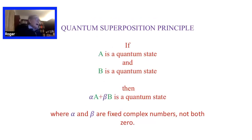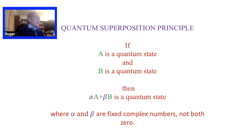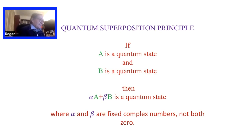A fundamental principle of quantum mechanics is the principle of superposition. If A is a quantum state and B is a quantum state, then we also have allowable quantum states by forming linear combinations — alpha A plus beta B — where alpha and beta are complex numbers, not both zero.